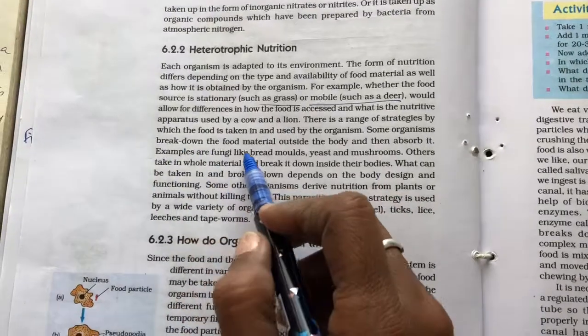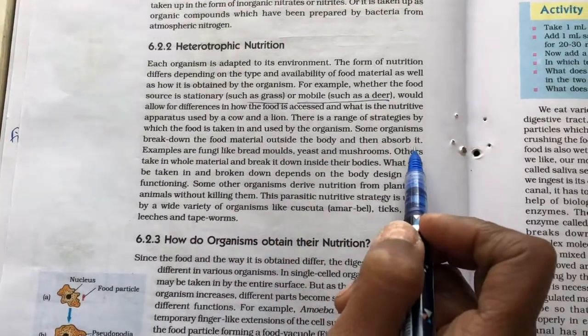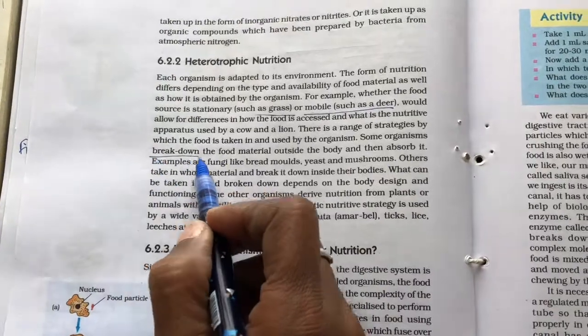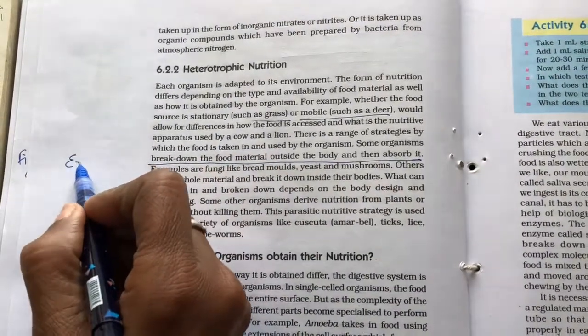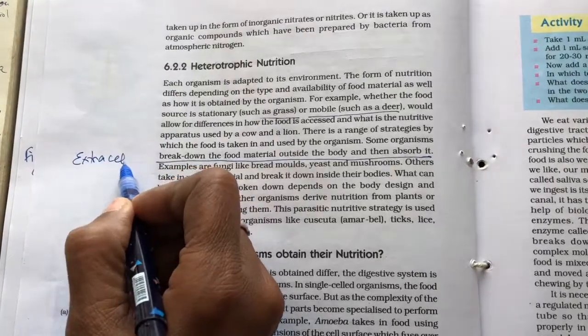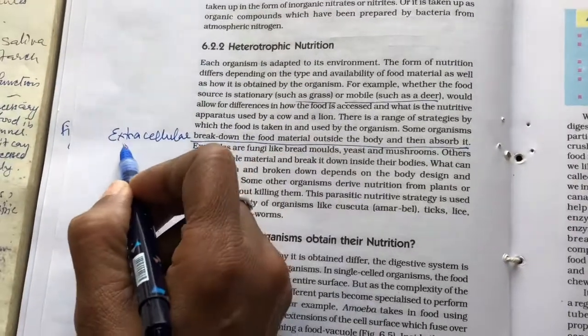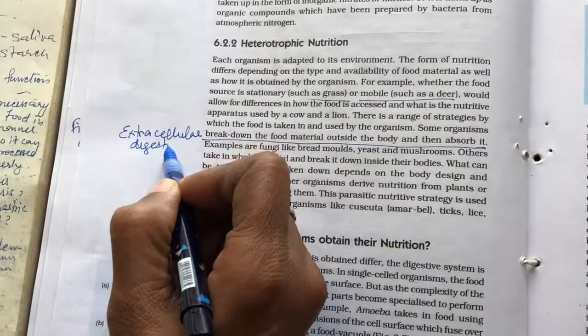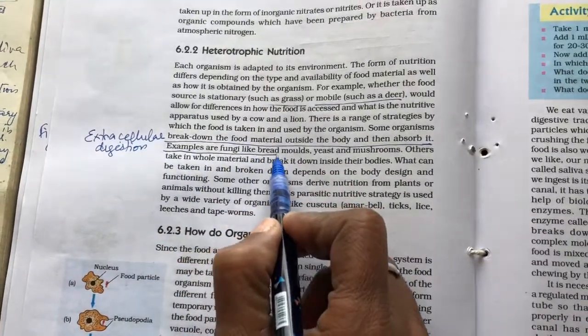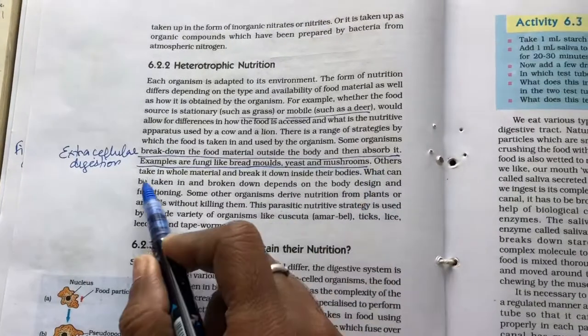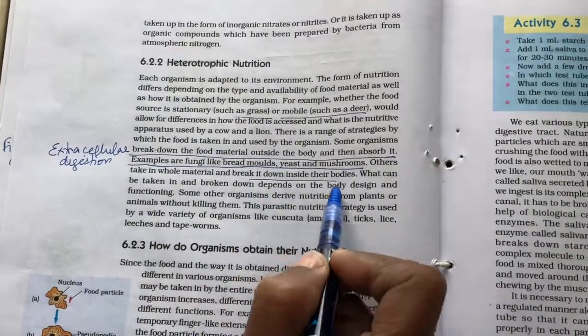Some organisms break down the food material outside the body and then absorb it. This is called extracellular digestion. Examples are fungi like bread molds, yeast and mushrooms.